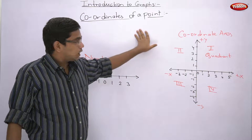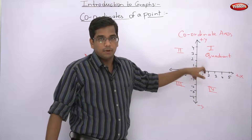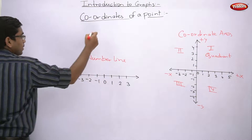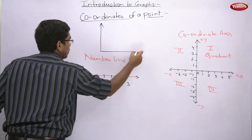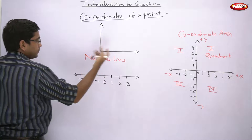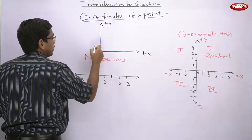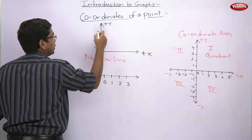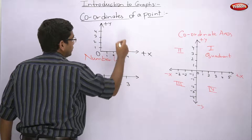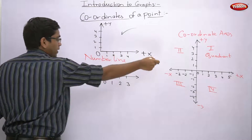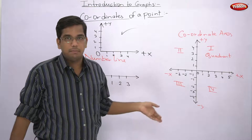For coordinates of a point, in your syllabus you are only concerned with the first quadrant. Only this — just like a graph with zero, a positive x-axis, a positive y-axis, with markings 1, 2, 3, 4 on both axes. Only this is in your syllabus. The other negative axes are not in your syllabus. Only the first quadrant is part of your syllabus.